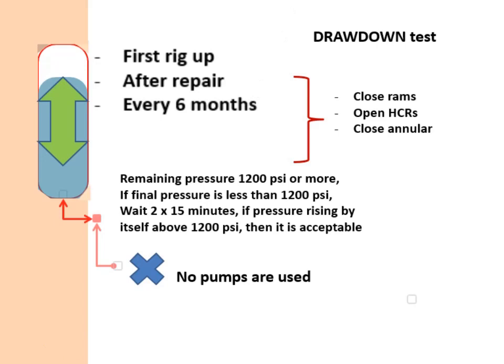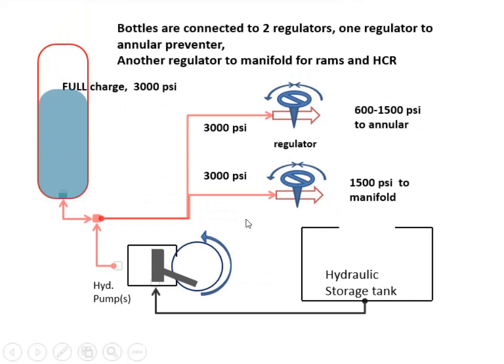Drawdown test should be done after rig up, after any repair, and periodically every 6 months. Bottles are connected to 2 regulators, one special for annular preventer, and another one for manifolds for all RAMs and HCR.